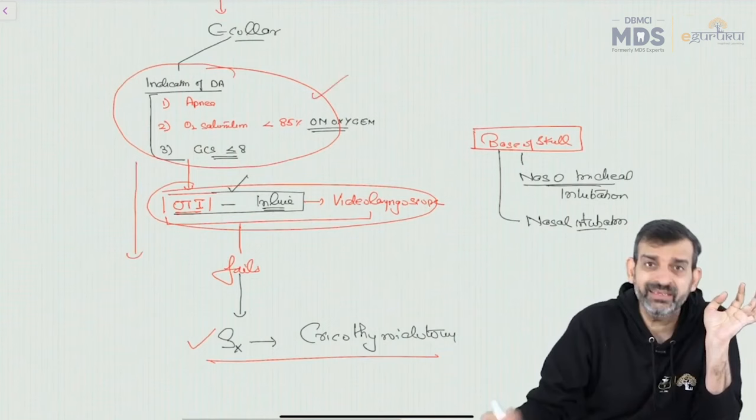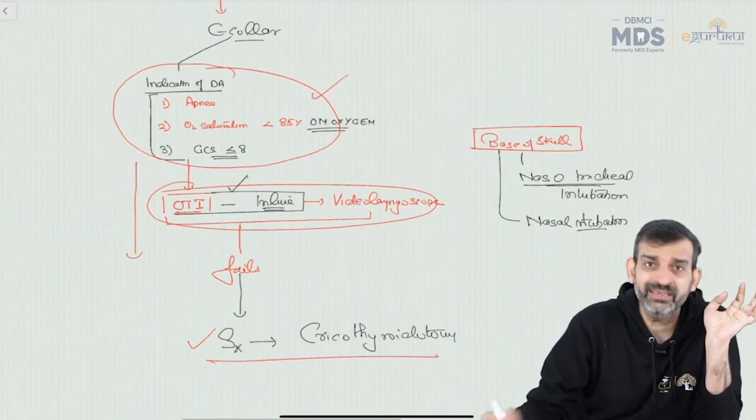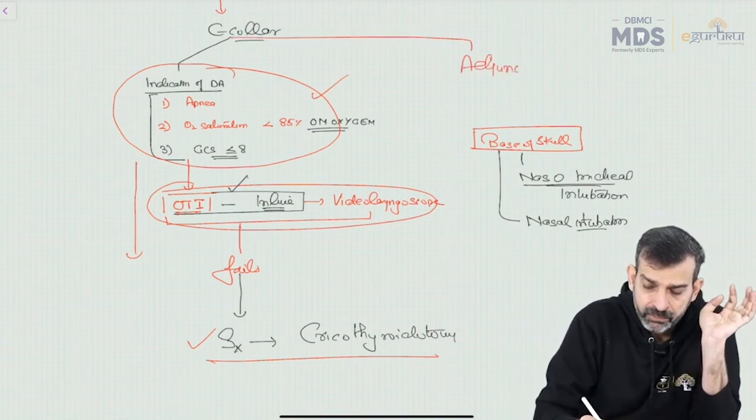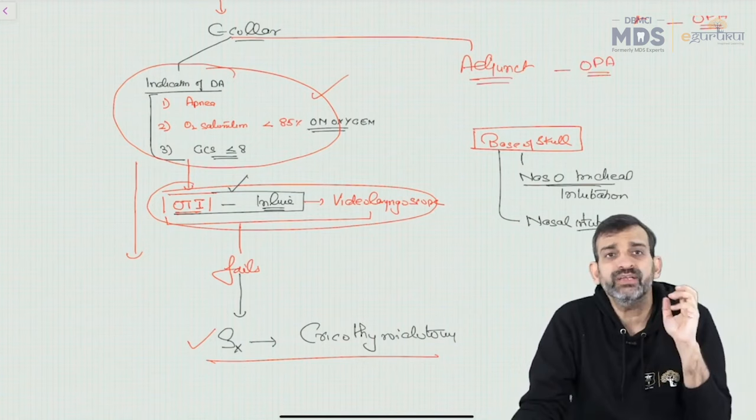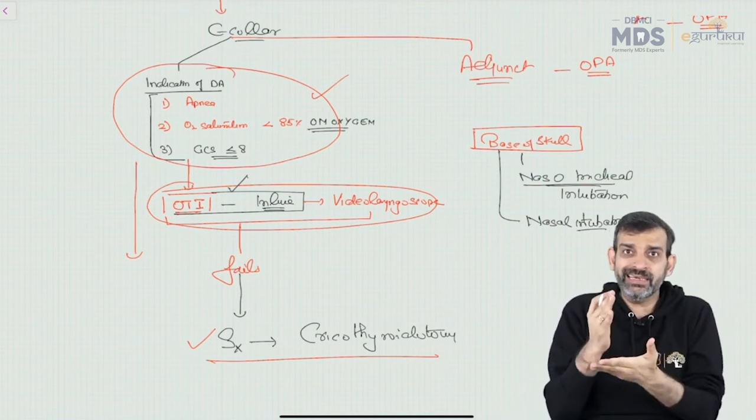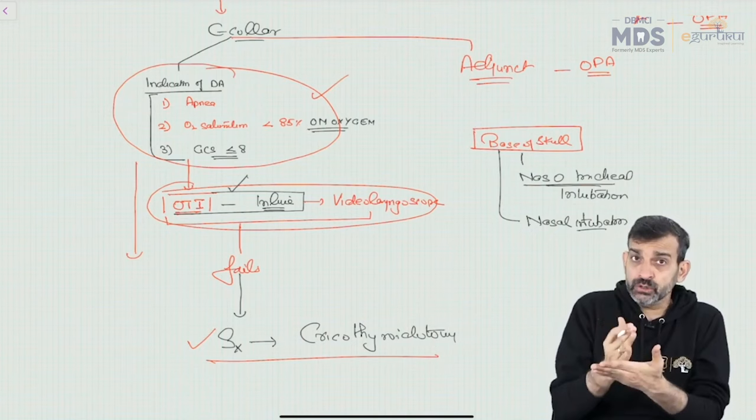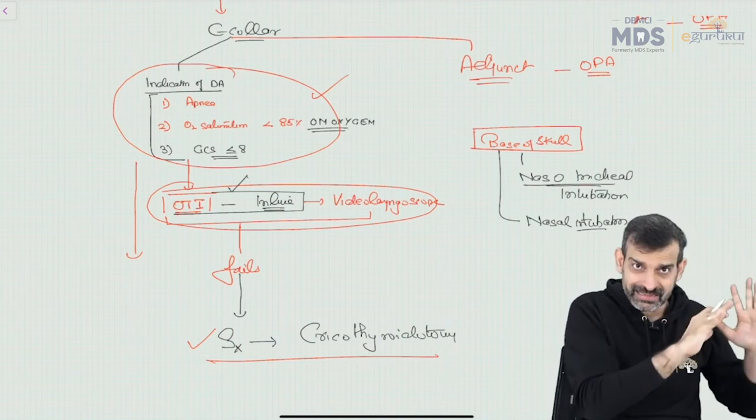If the indications for definitive airway are NOT present, we put in an adjunct airway. The preferred adjunct airway is the oropharyngeal airway (OPA). So we now understand: how to identify an airway problem, and if there is one, how to support that airway in a stepwise manner.